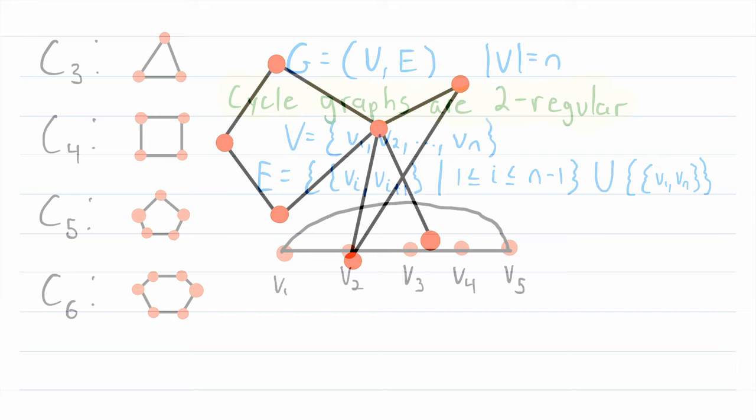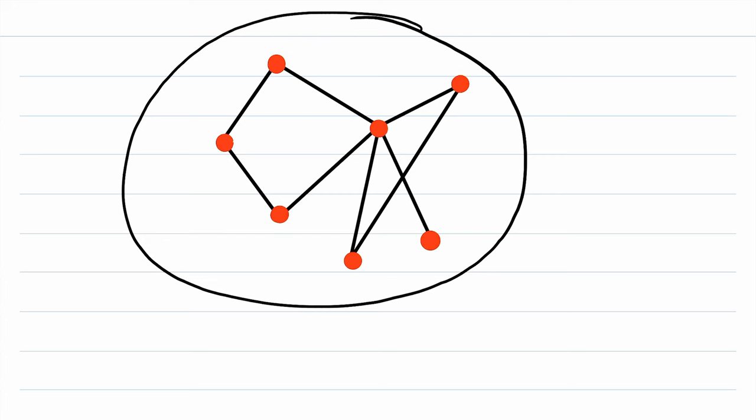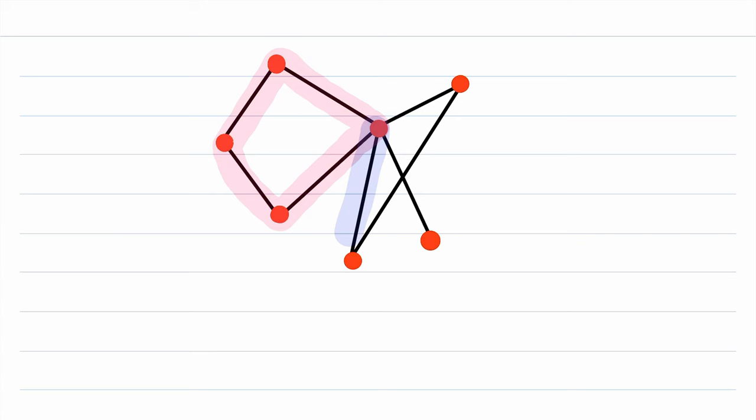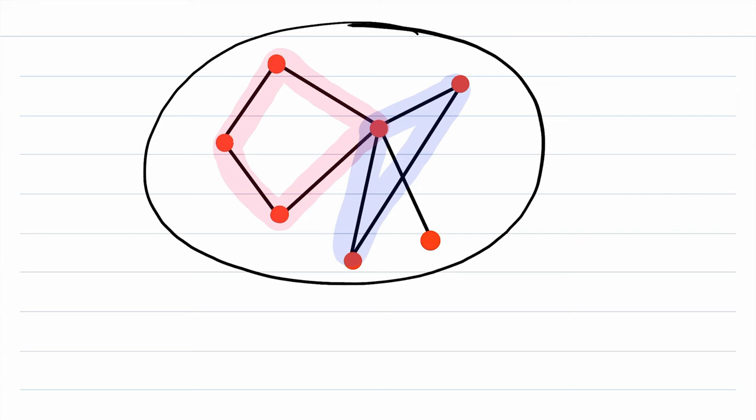One last thing before we go, here's a graph that you might be able to tell is not a cycle graph. However, a couple of the subgraphs of this graph are cycle graphs, and you can see two of them there. And this is something that we often want to know, whether a graph has any subgraphs that are cycle graphs or not. Sometimes we even want to know how many subgraphs of a graph are cycle graphs.